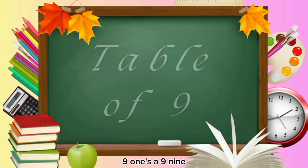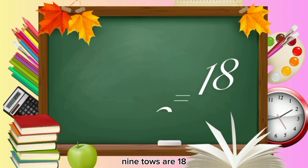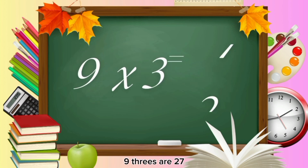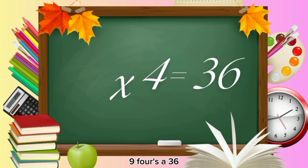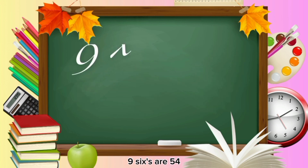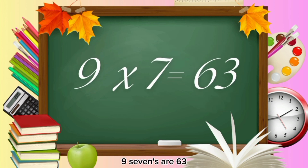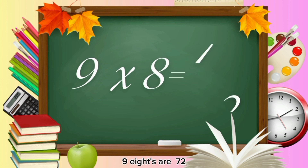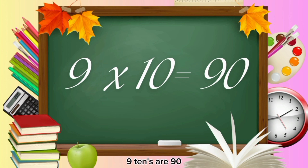Table of 9. 9 ones are 9. 9 twos are 18. 9 threes are 27. 9 fours are 36. 9 fives are 45. 9 sixes are 54. 9 sevens are 63. Nine eights are seventy-two. Nine nines are eighty-one. Nine tens are ninety. Please like and subscribe.